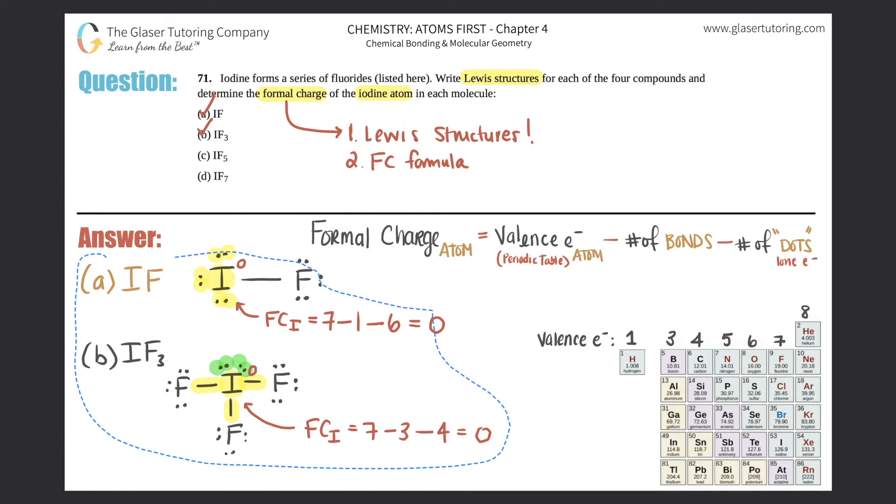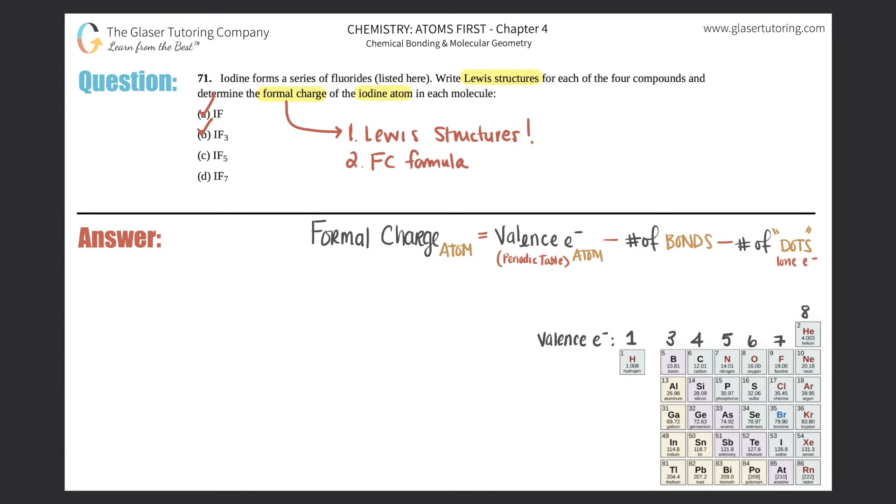Okay, so part (c), now we have IF₅. Same thing as before though - iodine is going to be in the middle surrounded by five fluorines. So one, two, three, four, and five. Each fluorine, if we just want to draw this properly, each fluorine will have three lone pairs around it to make the octet.